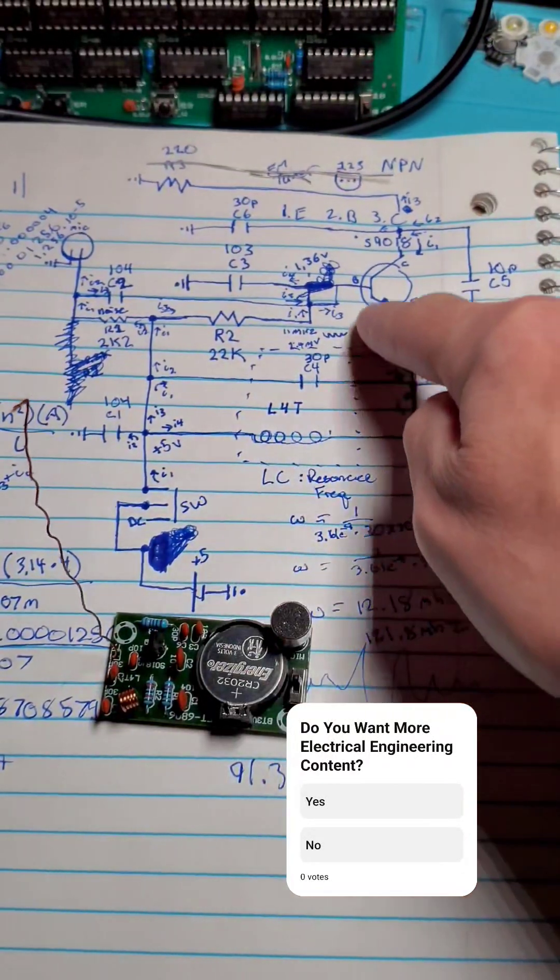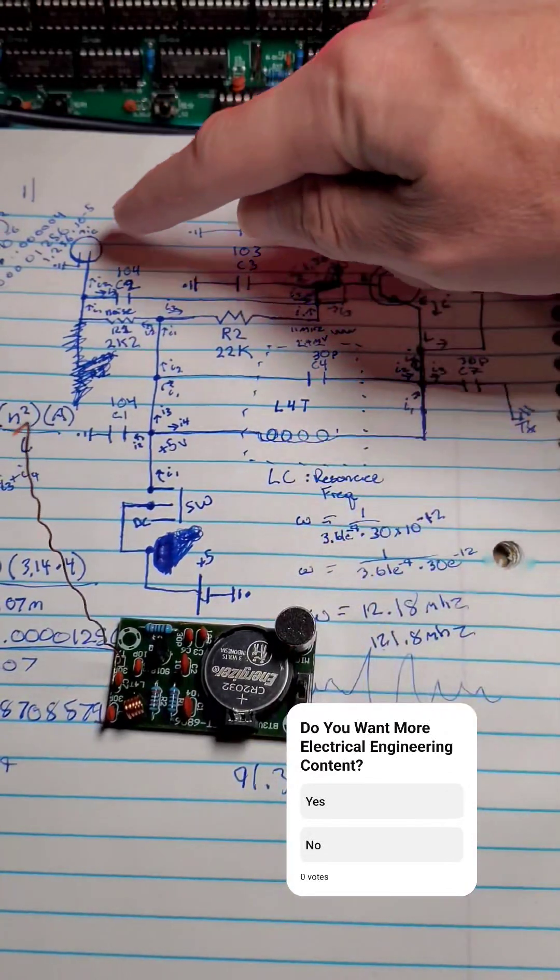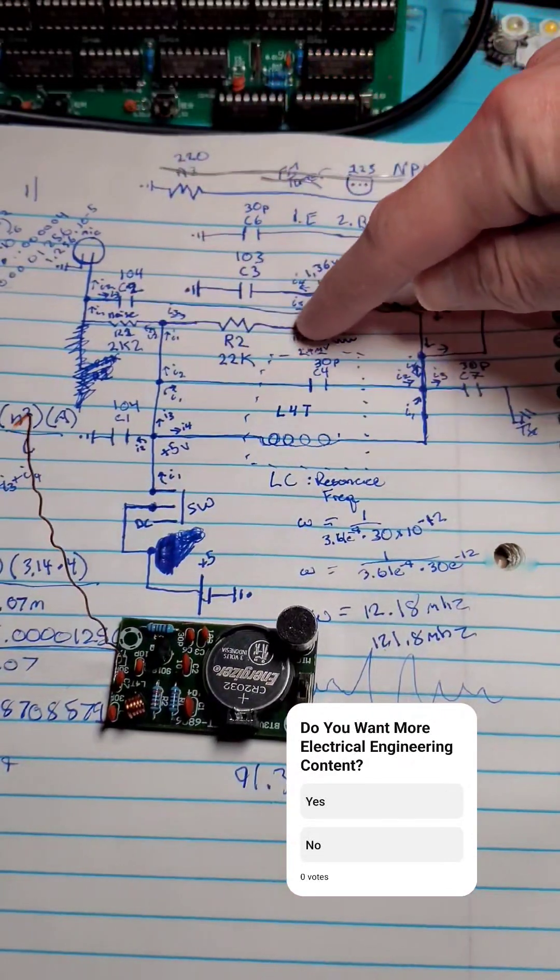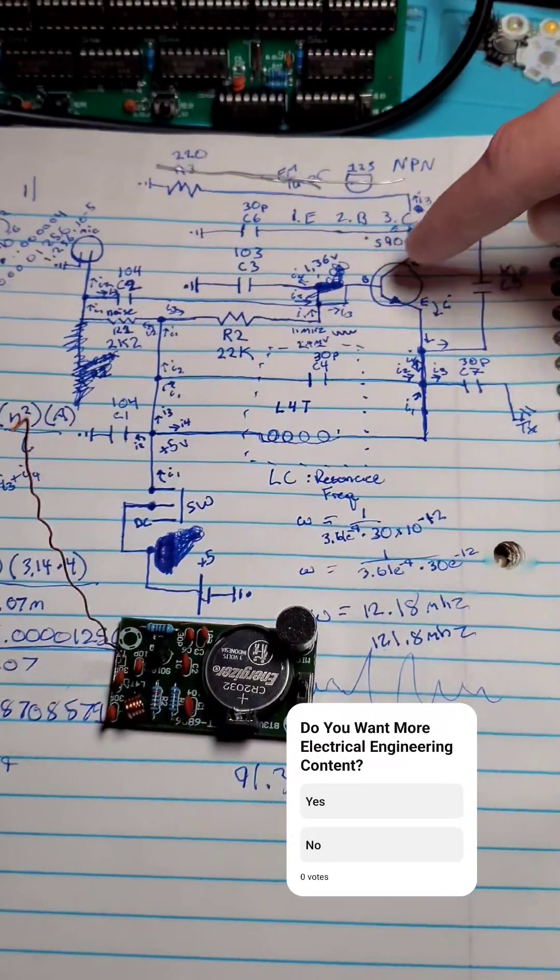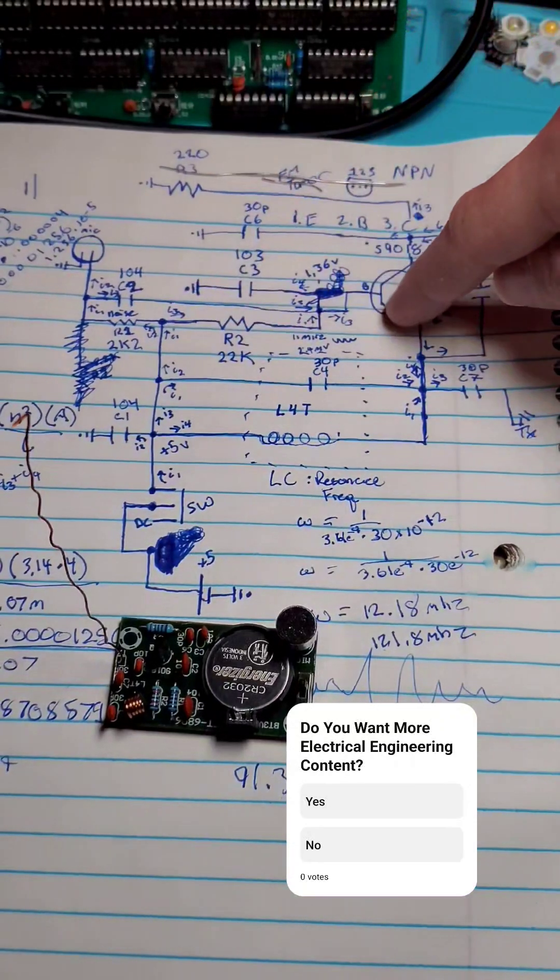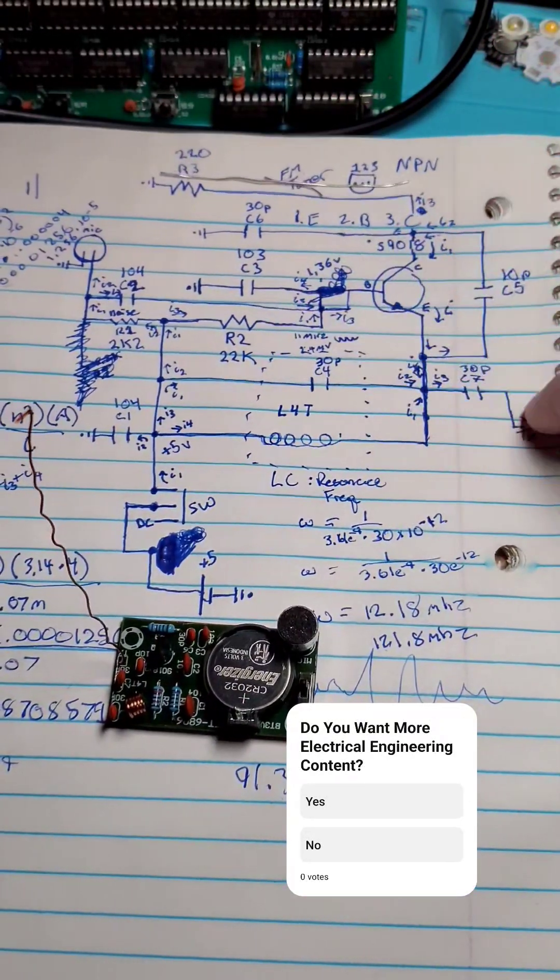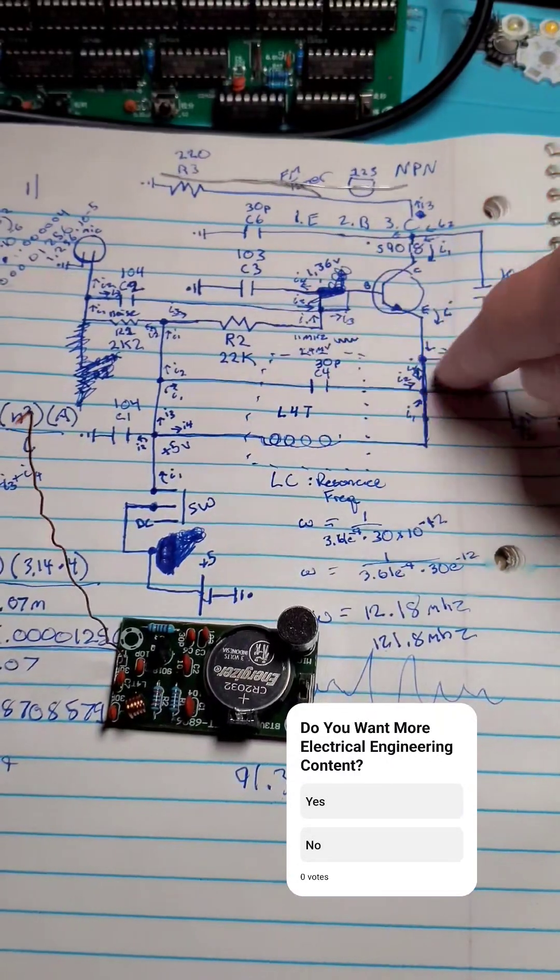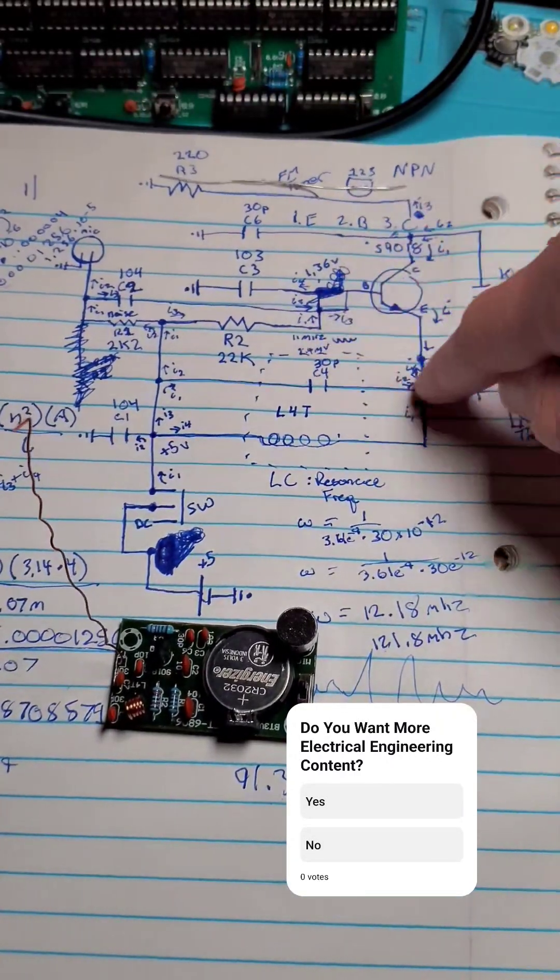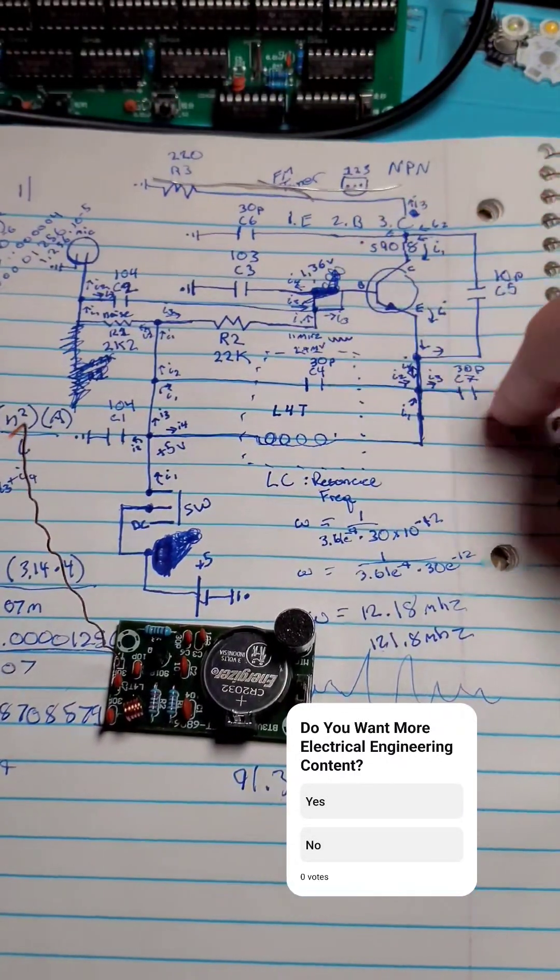A 4-turn inductor and capacitor in an LC circuit design produces our resonance frequency. Sound waves received by the microphone control the base of the NPN transistor, coupling our audio signal into our resonance frequency.